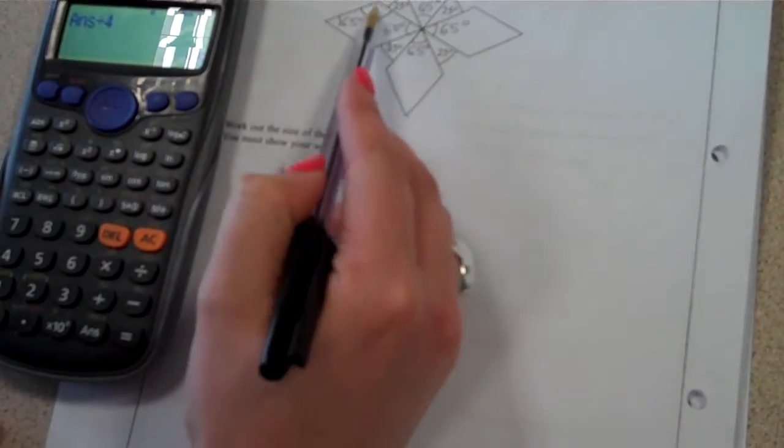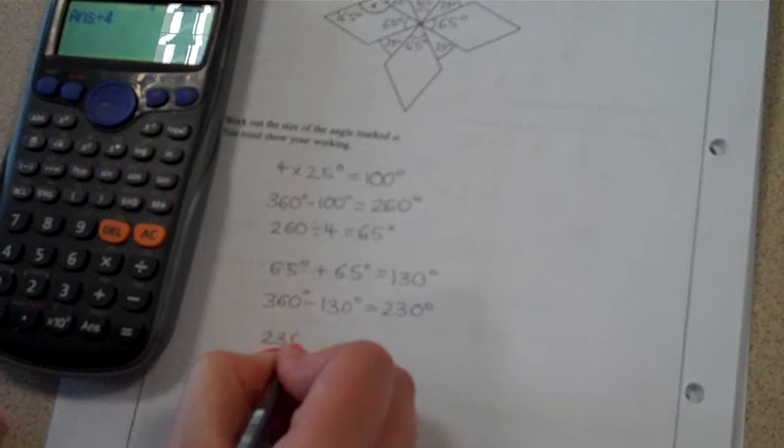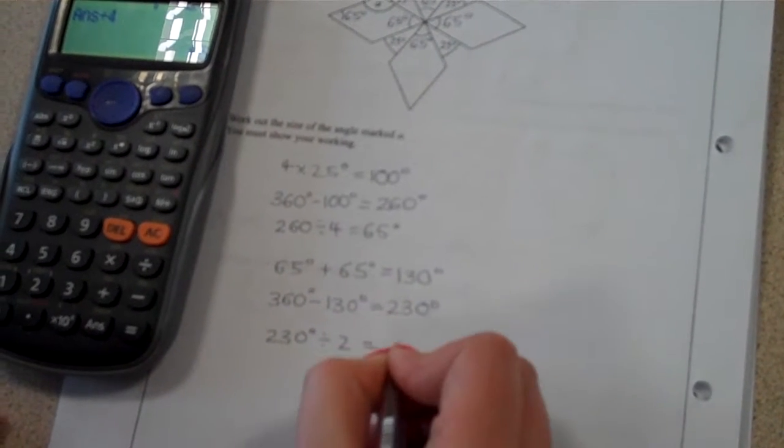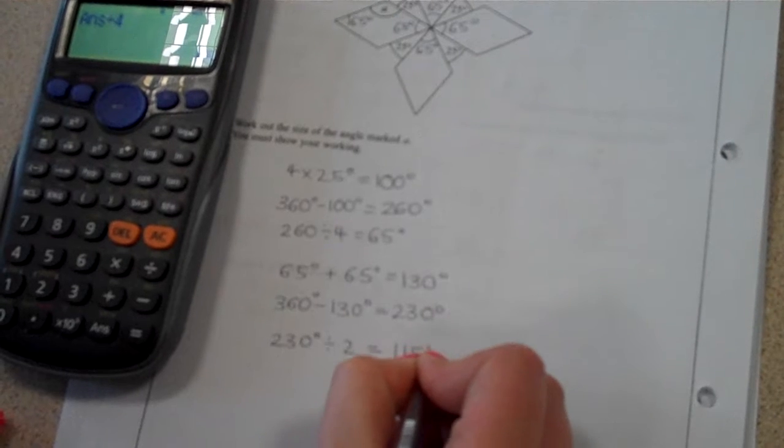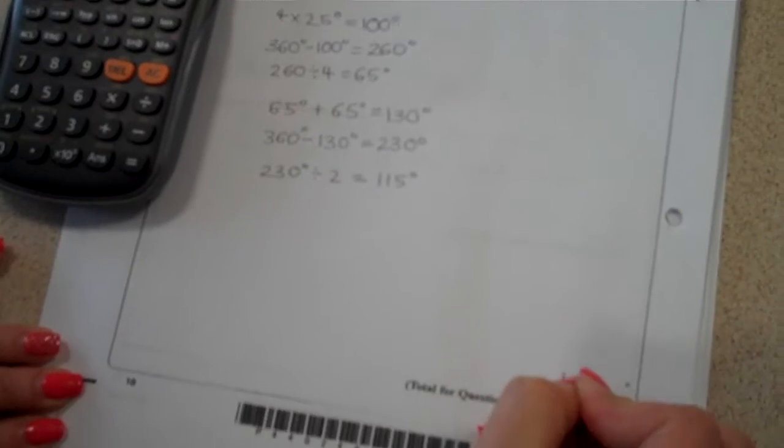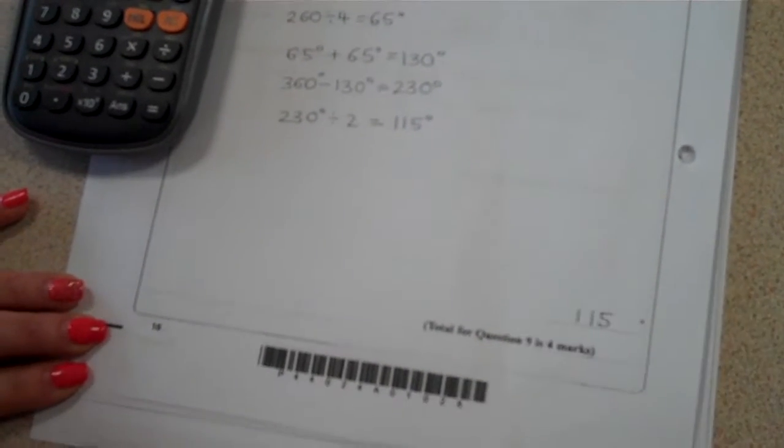We know that they're both the same, so therefore I just need to do 230 degrees divided by 2, and that then tells me that my angle a is 115 degrees. And that's what I would then write on my answer line.